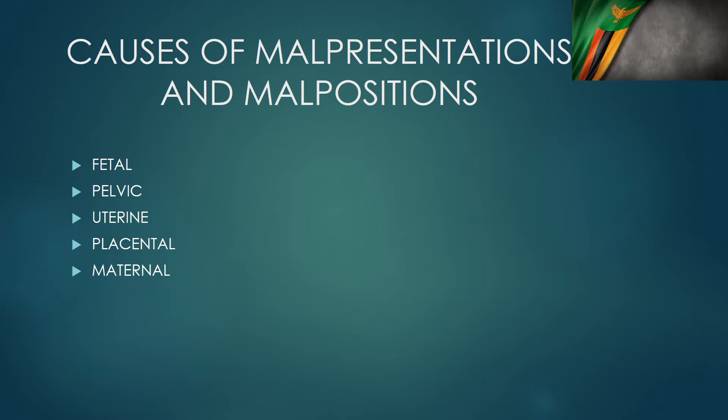We have platypelloid pelvis, android pelvis — all these abnormalities in the pelvis can cause malpositions and malpresentations. Sometimes uterine abnormalities such as a bicornuate uterus, or a fibroid in the uterus, can prevent the fetus from lying in an appropriate way. Those are the uterine causes.